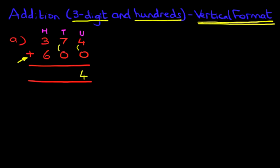And lastly, the hundreds column, 3 plus 6. So what is 3 plus 6? You know this, 3 plus 6 is 9. So 374 plus 600 is 974.